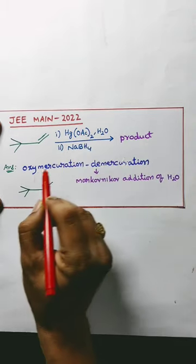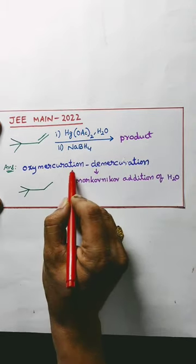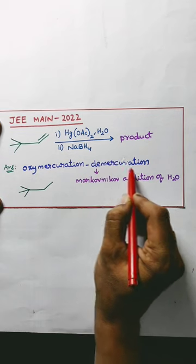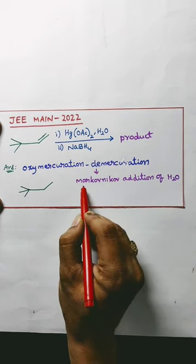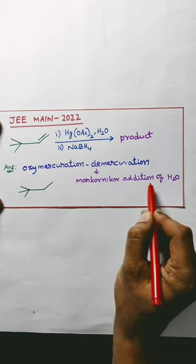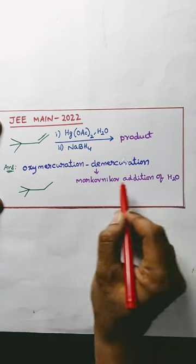This is a very important reaction — oxymercuration demercuration — which follows Markovnikov addition of water.